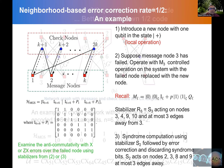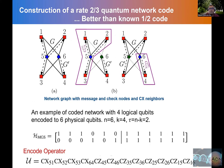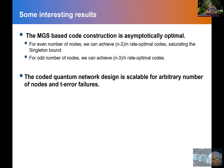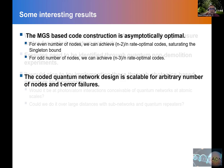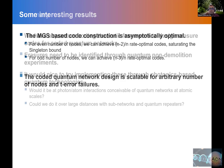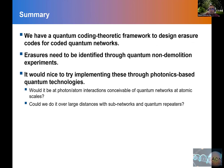To summarize: the modified graph state (MGS) code constructions are asymptotically optimal — we achieve the Singleton bound — and the coded network design is scalable for an arbitrary number of nodes. We have demonstrated a complete framework for single node failure. We have a quantum coding-theoretic framework to design erasure codes that are local for coded quantum networks. Erasures can be identified using quantum non-demolition experiments. Looking ahead, could we think about quantum networks at atomic scales or at large distances? These are really challenging open problems.